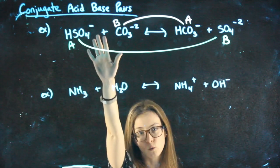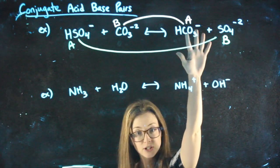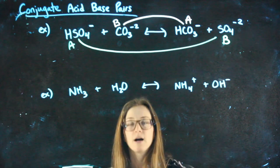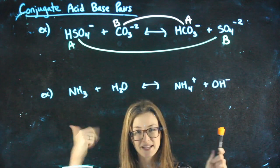So you should always have an acid and a base on one side—the order does not matter—and an acid and a base on the other side. Again, identify your pairs first, then it should make sense by the time you're done.